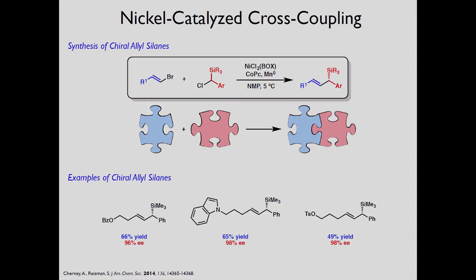One of the current projects on reaction development in the Reisman group is nickel catalyzed cross coupling reactions. Here you can see the puzzle pieces coming together. We take vinyl bromides and silo substituted benzoyl chlorides and afford chiral allosylane materials. Here are some examples of chiral allosylanes that we have developed using this reaction.